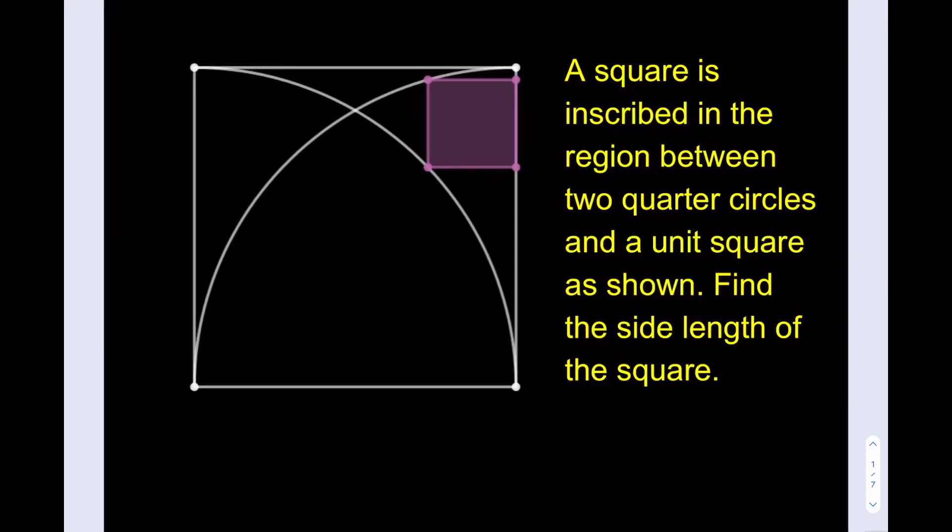Hello everyone, in this video we're going to be solving a geometry puzzle, a very exciting one. So, let's get started. If you want to pause the video, you can. A square is inscribed in the region between two quarter circles and a unit square as shown. Find the side length of the square.